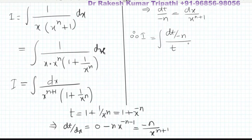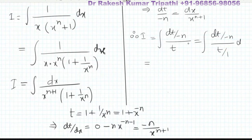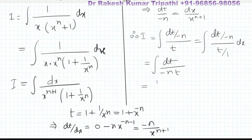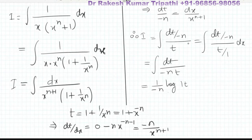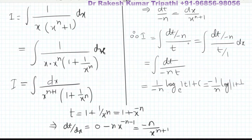Now the numerator has something in the denominator but the denominator t is incomplete, so we introduce 1 in the denominator of the denominator, writing it as t/1. This gives the integral as dt/(−n·t). Taking 1/(−n) common, the integral of 1/t is log|t|, so we get (1/(−n))·log|t| + C.